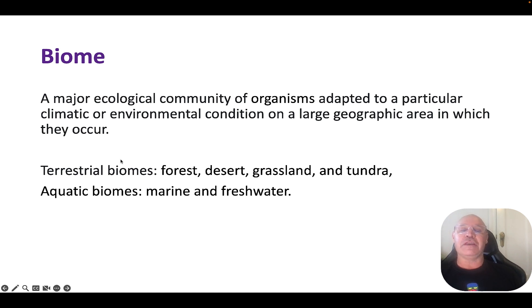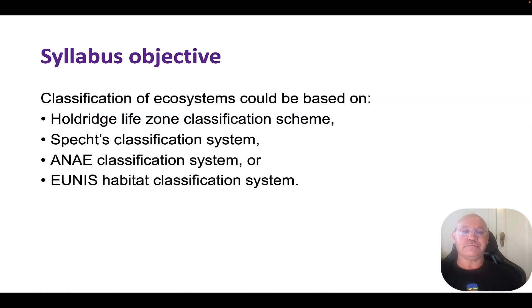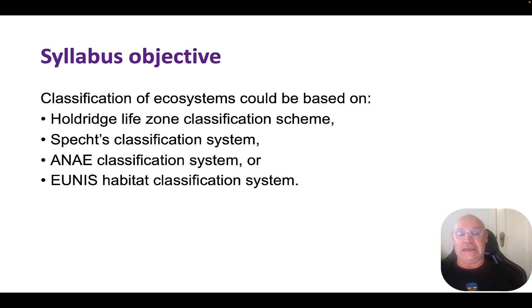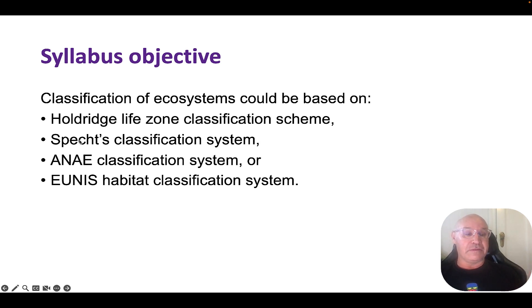Terrestrial biomes, thinking really broadly, include forests, desert, grasslands, and tundra. Aquatic biomes include marine and freshwater. So that was the first syllabus objective. The next one is ways in which we can classify ecosystems, and this can be done based on several different systems. We're going to look at some of these. In my next video, I'm going to talk more specifically about SPECT's classification system.